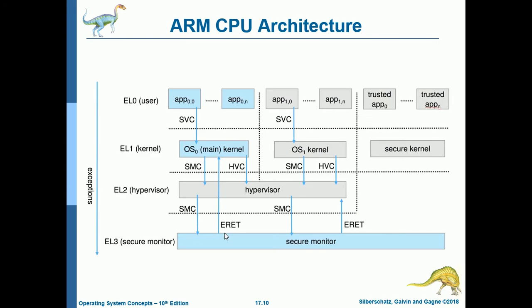Next is the ARM CPU architecture. In the 64-bit ARM V8 architecture, ARM extended its model to support four exception levels (EL): EL0 for user, EL1 for kernel, EL2 for hypervisor, and EL3 for secure monitor. Any of the exception levels allows running a separate OS side-by-side. EL3, the secure monitor, is the TrustZone layer. The hypervisor is the virtual machine manager, and EL1 kernels each have their own OS kernel when running other operating systems.